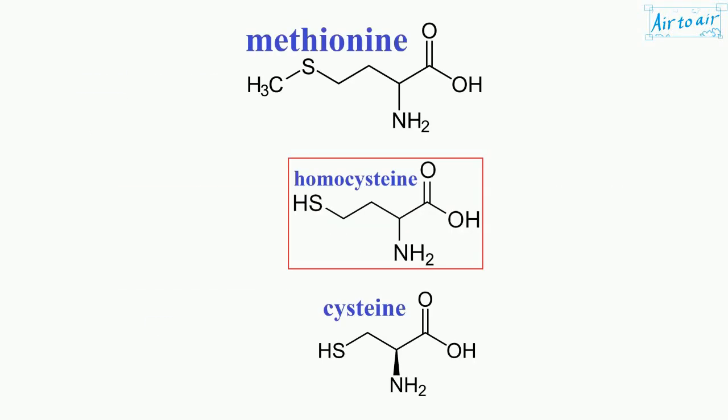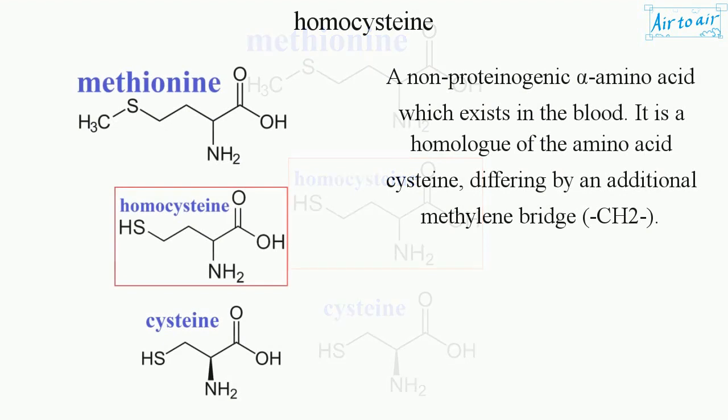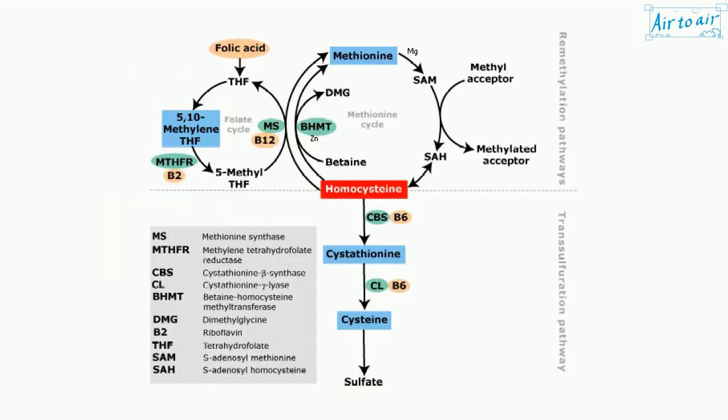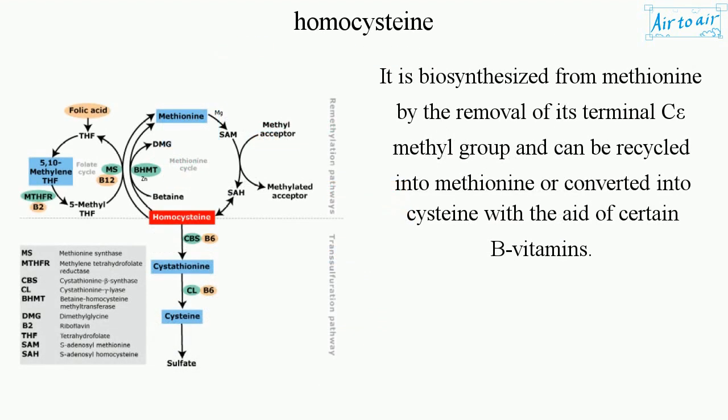Homocysteine is a non-proteinogenic alpha-amino acid which exists in the blood. It is a homologue of the amino acid cysteine, differing by an additional methylene bridge, CH2. It is biosynthesized from methionine by the removal of its terminal C-epsilon methyl group, and can be recycled into methionine or converted into cysteine with the aid of certain B vitamins.